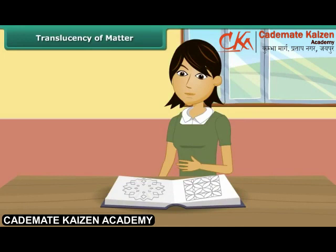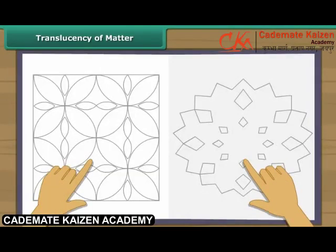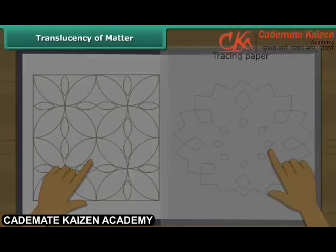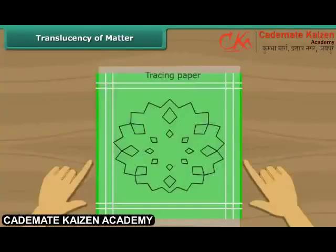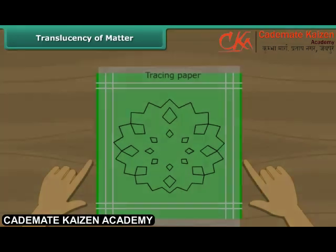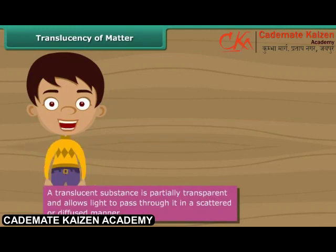Rekha is getting ready to embroider a handkerchief. She has located a pattern in a book and wants the same on her handkerchief. She uses a tracing paper to copy the pattern from the book onto her hanky, and is then all set to embroider. What made this embroidery possible was the translucent tracing paper. A translucent substance has the characteristics of both transparent and opaque substances — while it absorbs some light, it reflects back the rest.